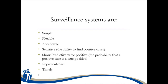Surveillance must show predictive value positive, which means the probability that if you find a case, that case is actually a true case and not just a false positive. It has to be representative — if you're only taking a sample of your population, it has to represent the whole population, which is often what hand hygiene auditing is about. And it has to be timely — you have to give back information to those who need it in a timely way, otherwise you're not actually assisting with anything.